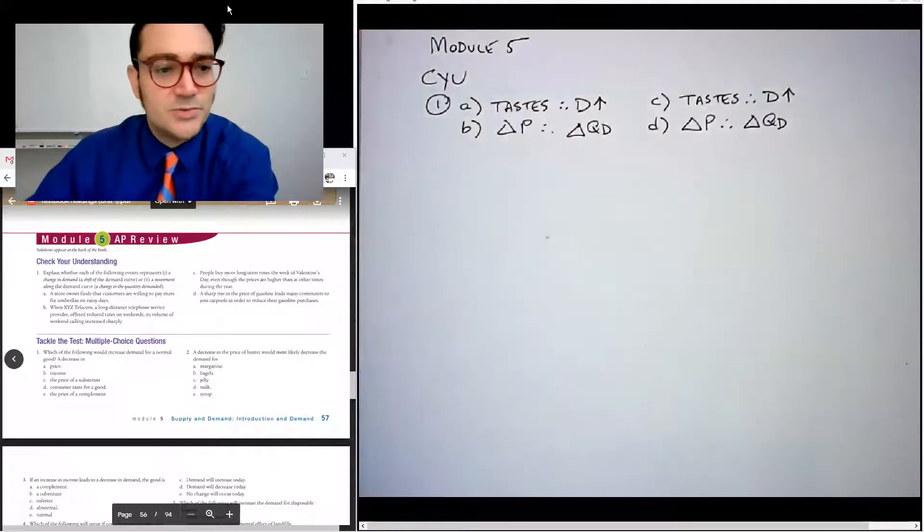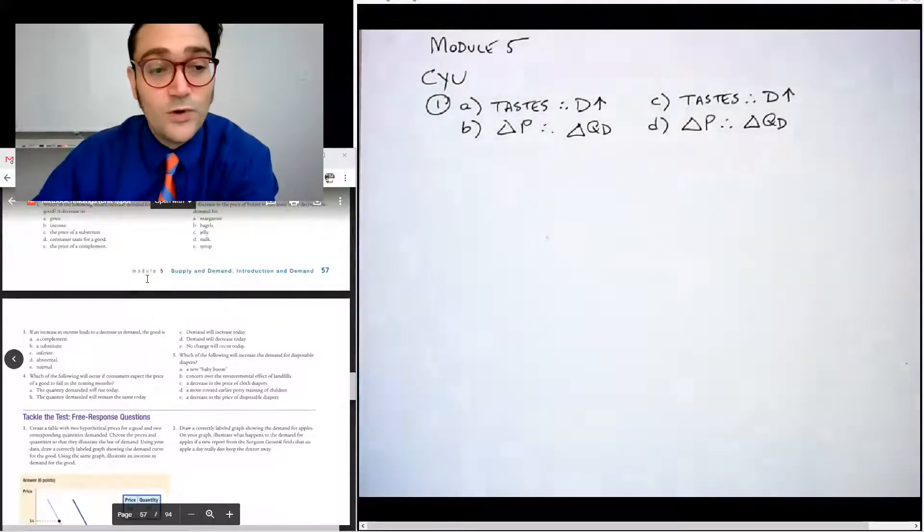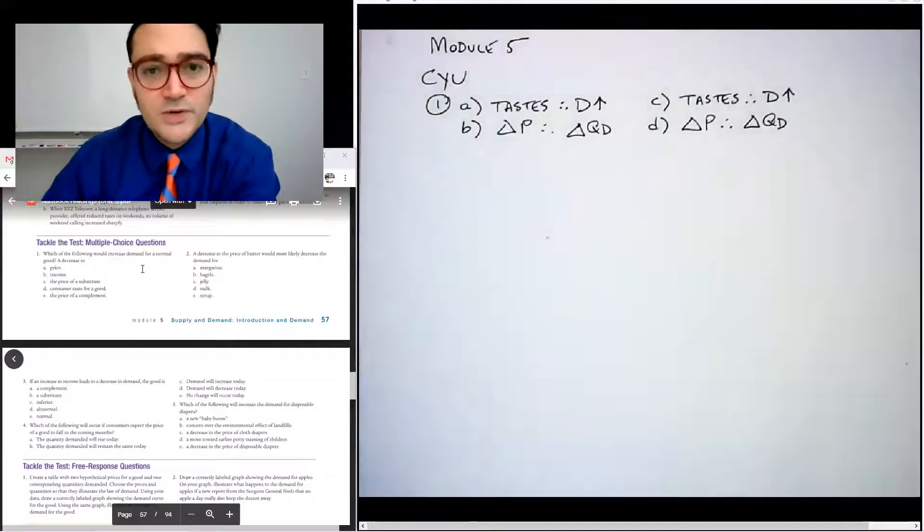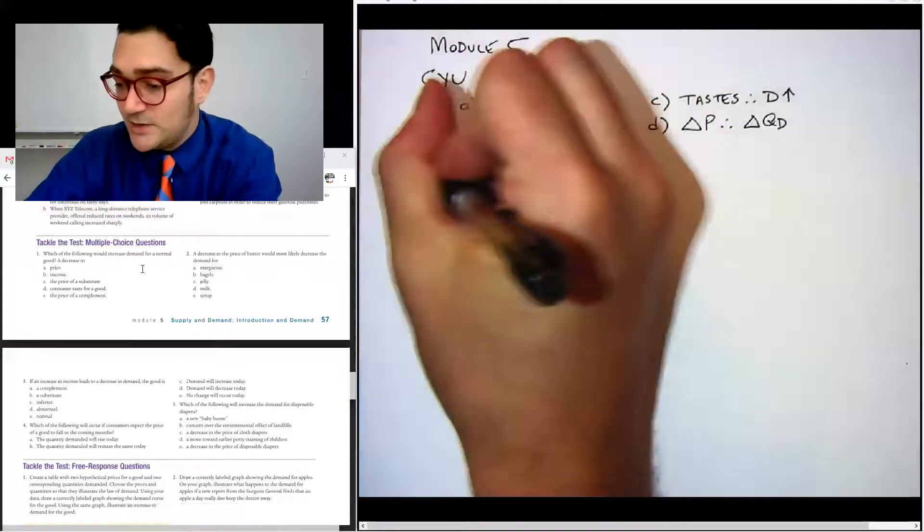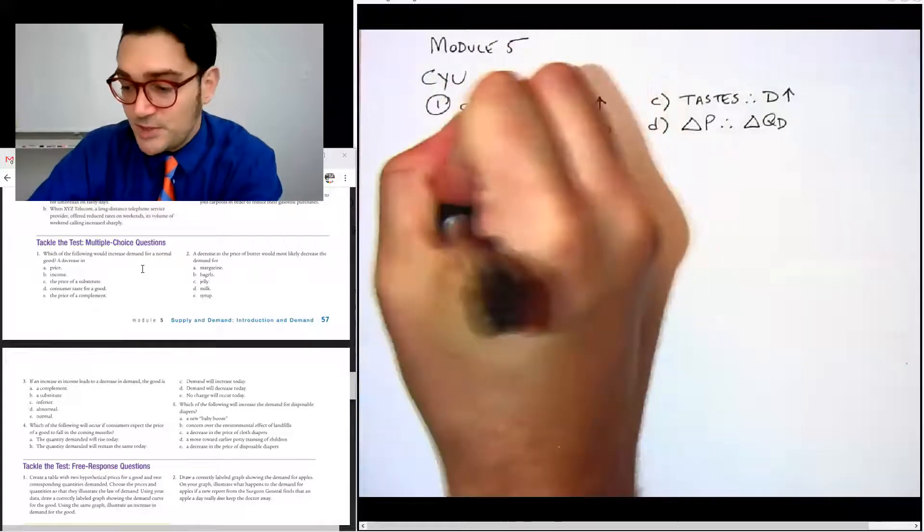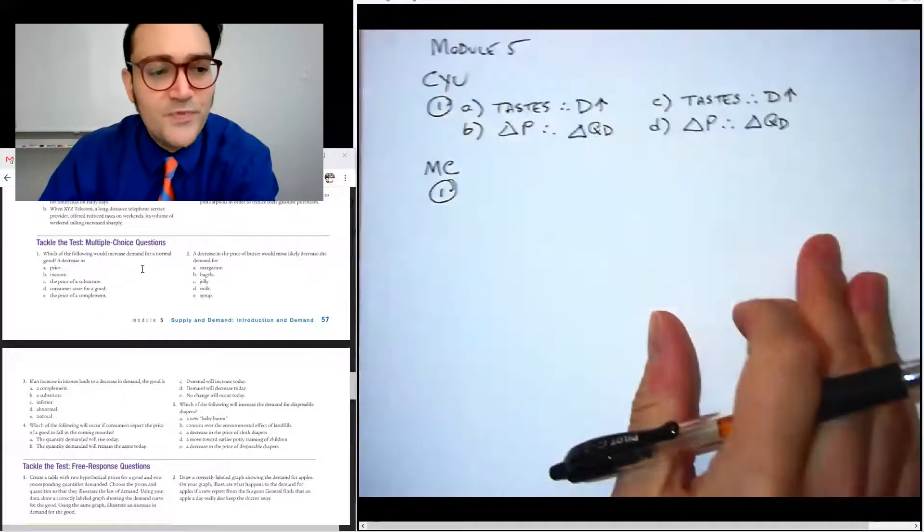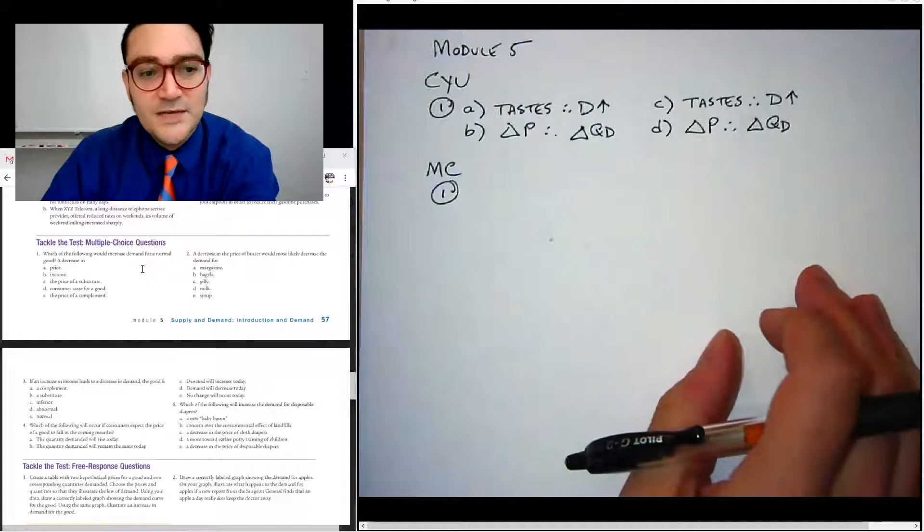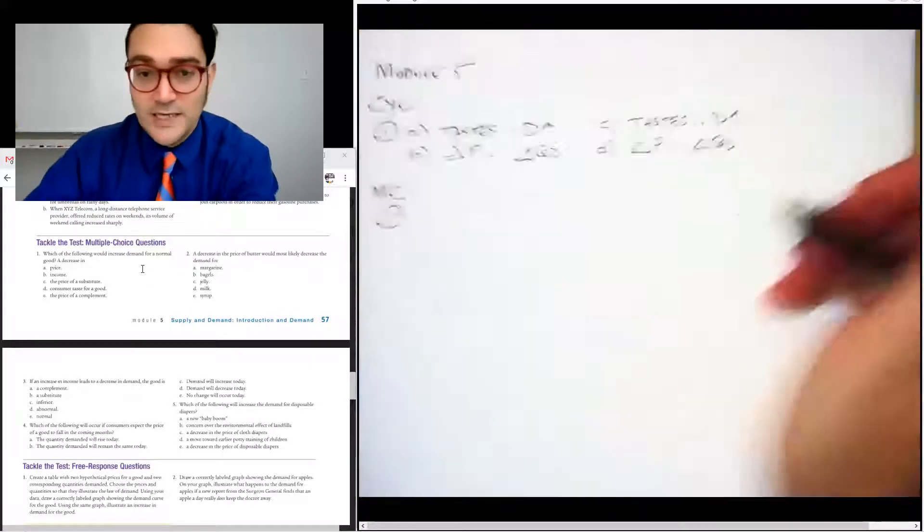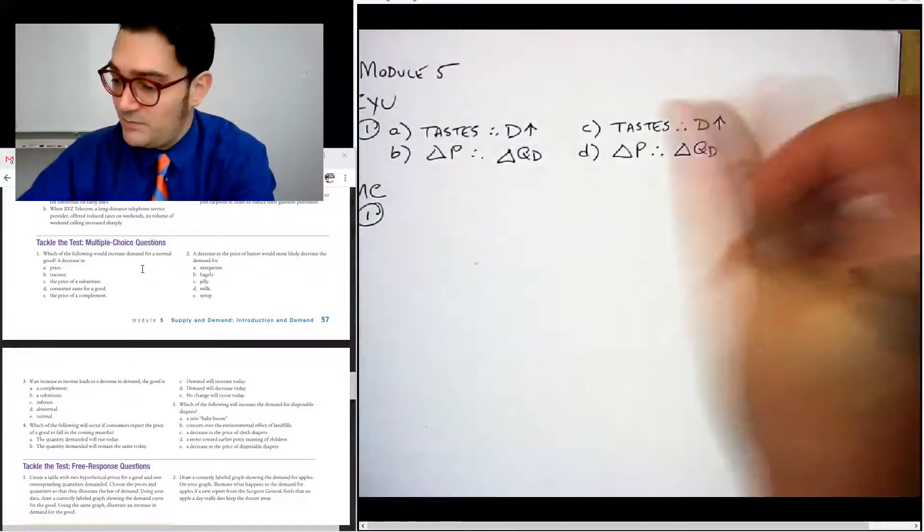Okay. Now tackle the test multiple choice. Again, you don't have to do these for the bonus credit for these modules, but I know that many of you would like to know the answers probably because we have a quiz coming up. So number one, which of the following would increase demand for a normal good. Now I'm going to write off to the side, the MERIT.